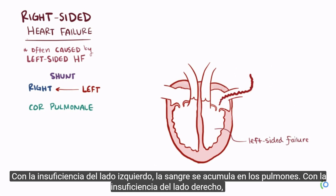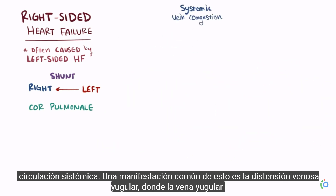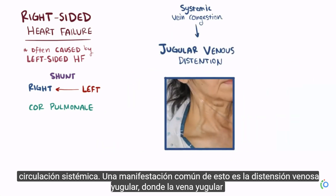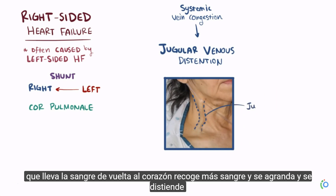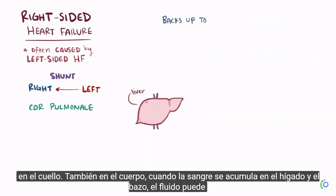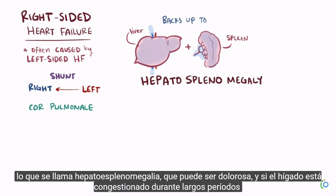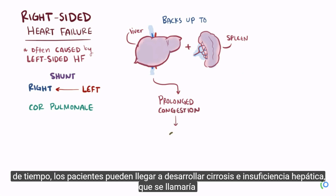With left-sided failure, blood gets backed up to the lungs. With right-sided failure, blood gets backed up to the body, so patients have congestion in the veins of the systemic circulation. One common manifestation is jugular venous distension, where the jugular vein becomes enlarged in the neck. When blood backs up to the liver and spleen, fluid moves into the interstitial spaces of those organs, causing hepatosplenomegaly, which can be painful. Long-term liver congestion can eventually cause cirrhosis and liver failure, called cardiac cirrhosis.